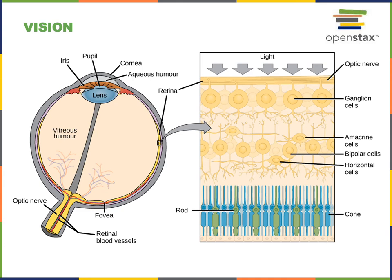There are two major types of photoreceptors: rods and cones. Rods are the photoreceptors that are activated by a broad range of light wavelengths, meaning a broad range of colors of light. Therefore, rods give us black and white vision and not colored vision.